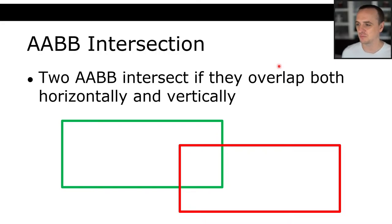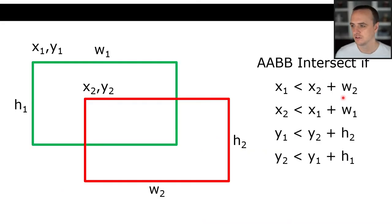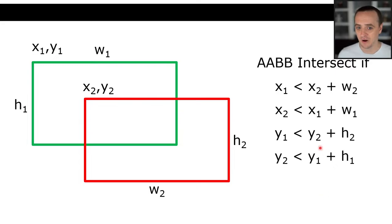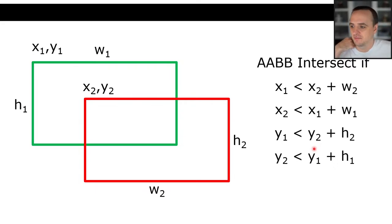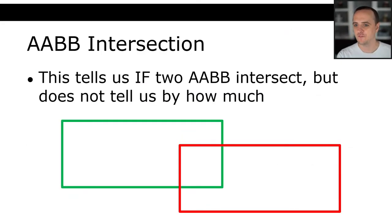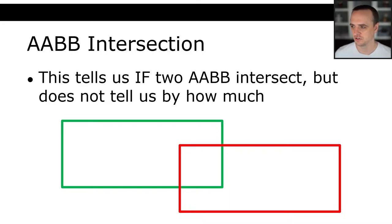That's it. This problem, which we thought would involve computing 16 different line intersections, is now just those two calculations. Axis-aligned bounding boxes intersect if they overlap vertically and horizontally. Look at how fast that is — isn't that crazy? That tells us if two bounding boxes intersect, but it doesn't tell us by how much they intersect. We're going to want to know how much they intersect in order to do a bunch of calculations in our game engine.